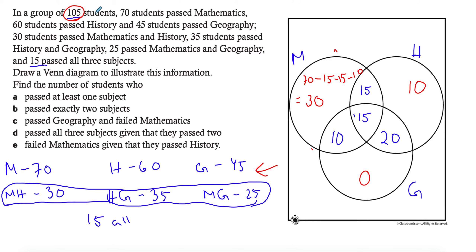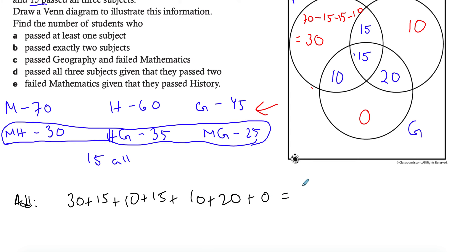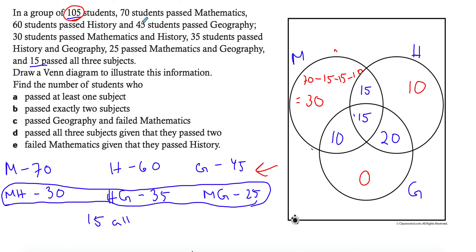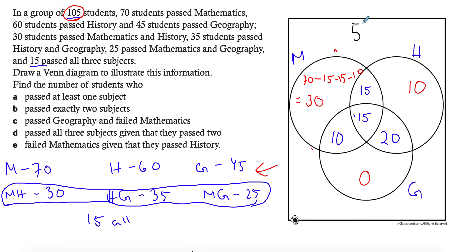Adding all the numbers: 30, 15, 10, 15, 10, 20, and 0 gives a total of 100. But my total is 105 students, which means 5 students passed none of the three subjects — these go outside the circles.